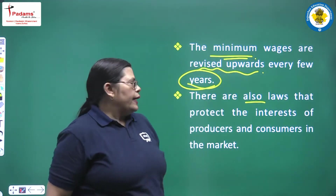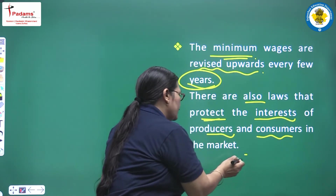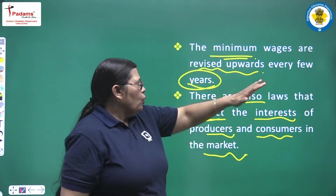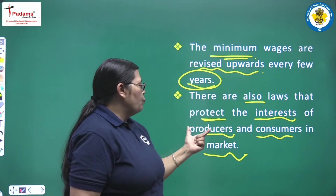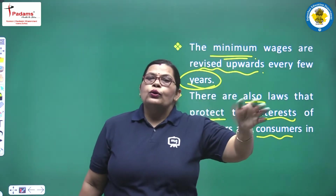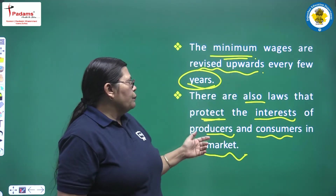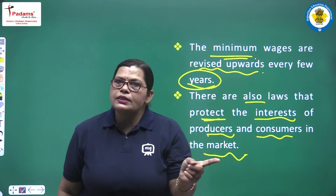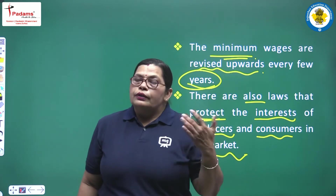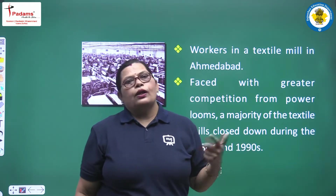There are also laws that protect the interests of producers and consumers in the market as well. Many laws are there to protect the interests of producers — for example, we say that farmers get less money. For the protection of the interests of the producers as well as the consumers in the market, new laws are important, and all these new laws imposed by the government really mean a lot to all of us.